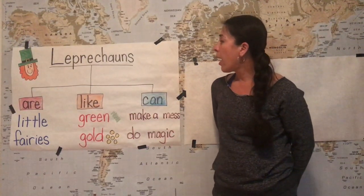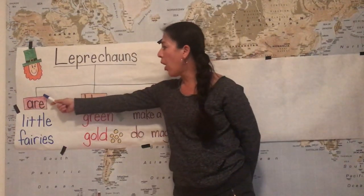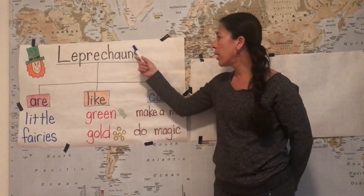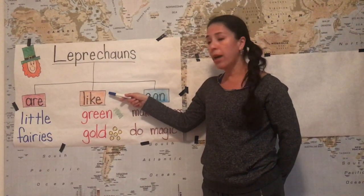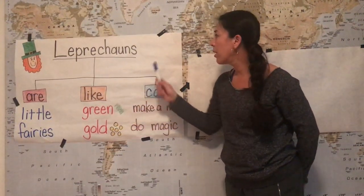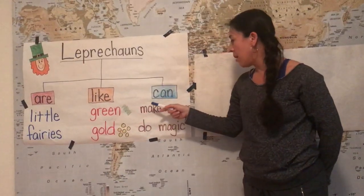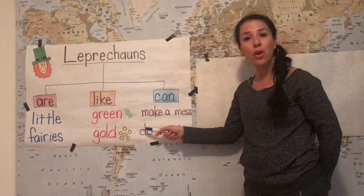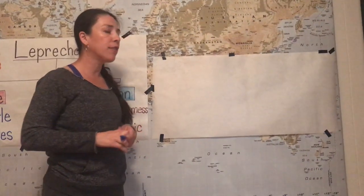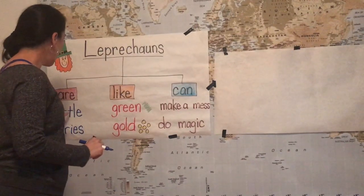I have here my title: 'Leprechauns are' — I have two choices: little and fairies. 'Leprechauns like' — I have two choices: green or gold. 'Leprechauns can' — I have two choices: make a mess or do magic. So I have my blank piece of paper here, and I think for my first sentence I'm going to write 'Leprechauns are little.' And 'little' is a sight word, so you already know that word.